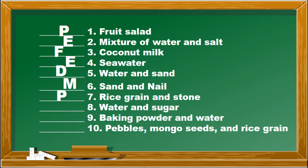Number eight, water and sugar — F for filtering. Number nine, baking powder and water — again, filtering. And number ten, pebbles, mongo seeds, and rice grain — of course, picking. Let's go to the separating mixture lesson — Lesson 3, separating mixture through decantation.